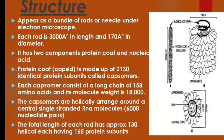Next is the structure. TMV appears as a bundle of rods or needles under the electron microscope. Each rod is 3000 Angstroms in length and 170 Angstroms in diameter. It has two components: a protein coat and nucleic acid.